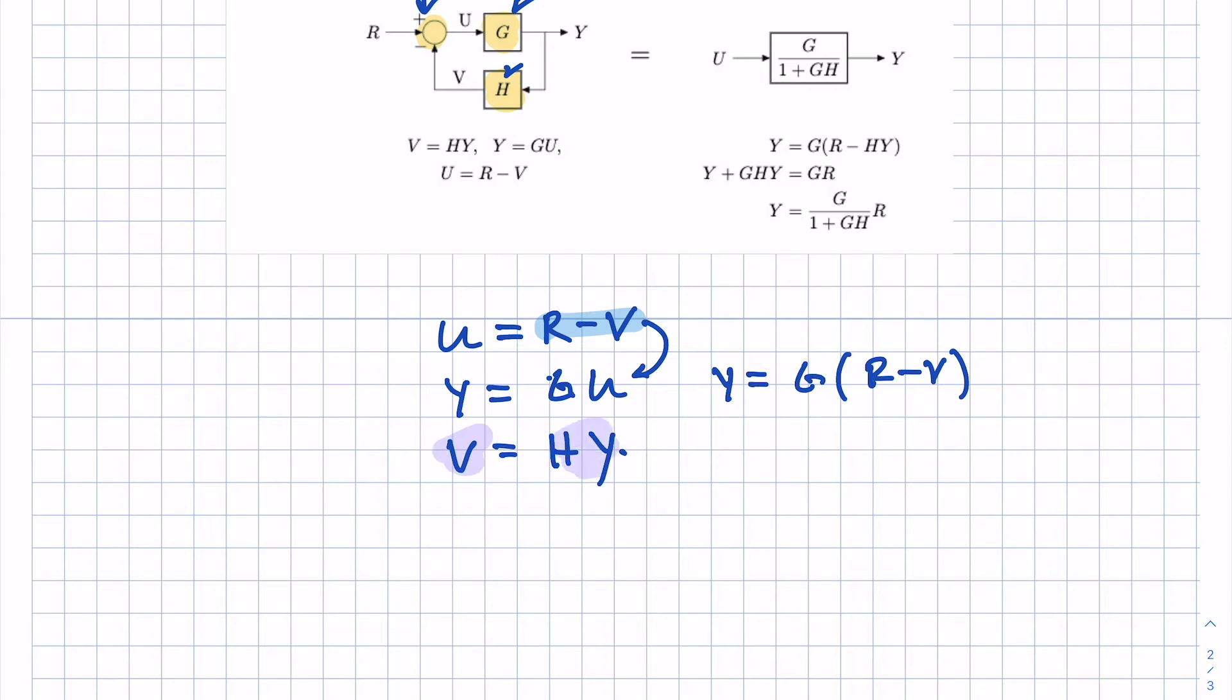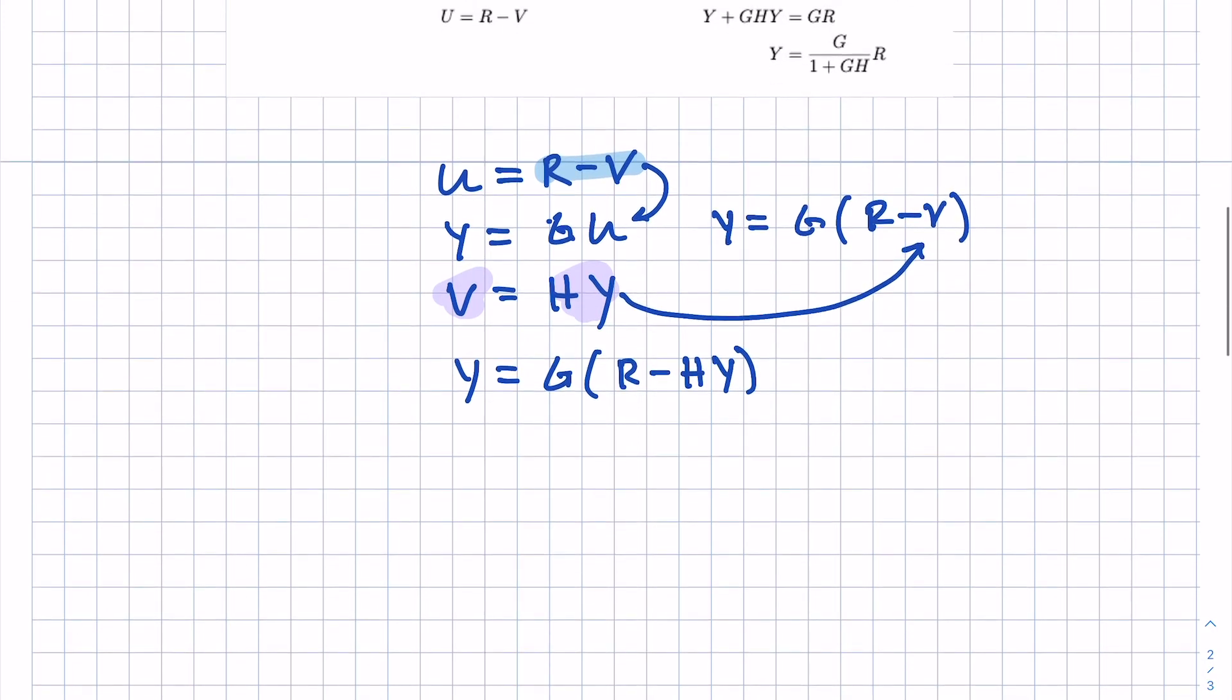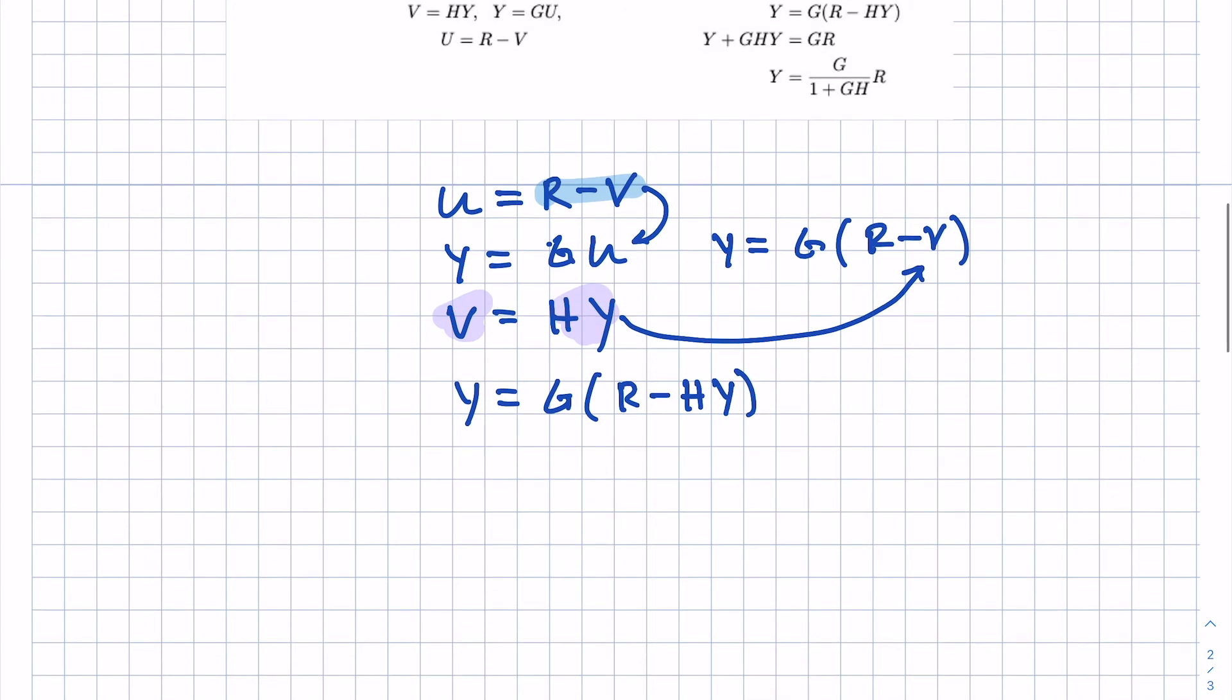I notice over here, here's the V, and I can come down and say Y is equal to G times R minus H Y. So at this point, I've eliminated the intermediate signals, and I just have the output signal Y.